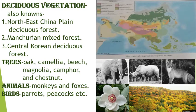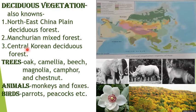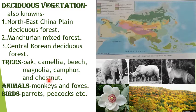The next type of vegetation is deciduous vegetation, also known as the north-east China plain deciduous forest, or Manchurian mixed forest in China. It is also known as the central Korean deciduous forest. The vegetation found here is oak, camellia, beech, magnolia, camphor and chestnut. Animals like monkeys and foxes, and birds like parrots and peacocks, are found here.